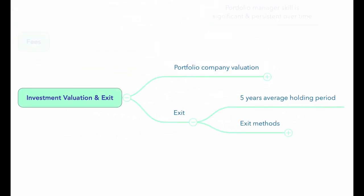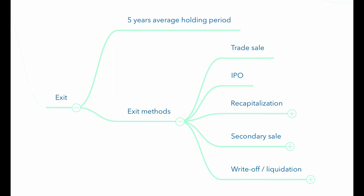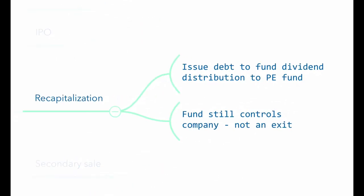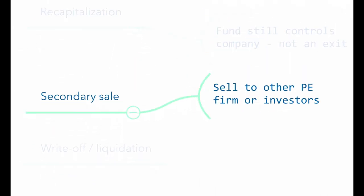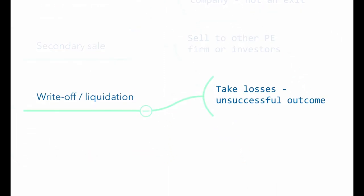The average holding period for companies in private equity portfolios is five years. Exit may occur through a trade sale, in which the portfolio company is sold to a competitor or other buyer; through an IPO; or through recapitalization, where the company issues debt to fund a dividend distribution to the equity holders — this is not a full exit but is often a step toward one. Exit may also occur through a secondary sale to another private equity firm or group of investors. In the case of an unsuccessful investment, exit may be in the form of a write-off or liquidation.